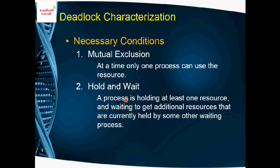The second condition is hold and wait. A process is holding at least one resource and waiting to get additional resources, where the additional resources are currently held by some other waiting process. One process uses one resource but needs another resource that is held by another process — so it waits. That is hold and wait.